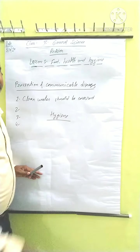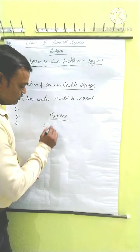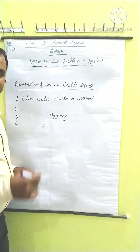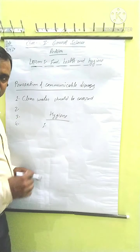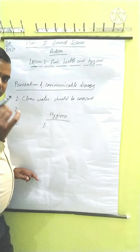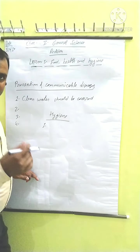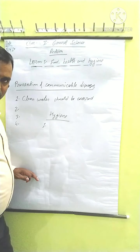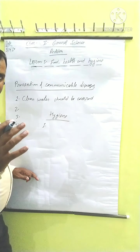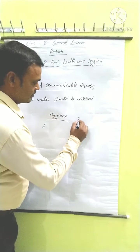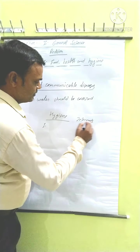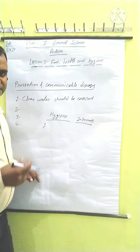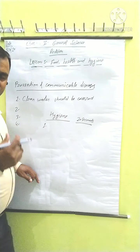Next is hygiene. Hygiene is also important, just like health. Health and hygiene are both related. Good hygiene habits include: daily bathing, which is very important for your body and health; cleaning your nails — if nails are long, cut and clean them; and washing your hands properly for at least 20 seconds.